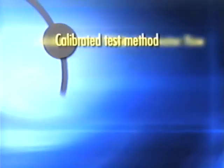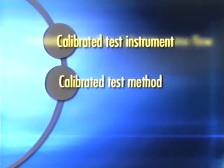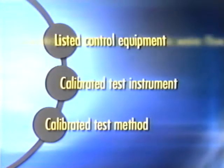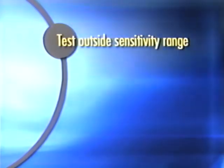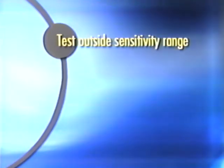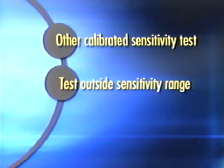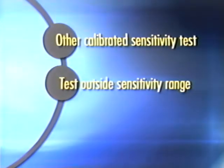You may perform a sensitivity test in one of several ways: by a calibrated test method, a manufacturer's calibrated sensitivity test instrument, listed control equipment arranged for the purpose, a setup with the control unit where the detector causes a signal when it is outside its listed sensitivity range, or another calibrated sensitivity test approved by the authority having jurisdiction.